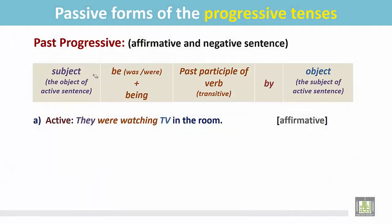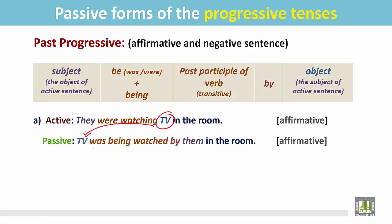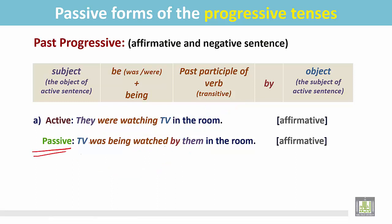See the example. 'They were watching TV in the room.' This is an affirmative statement. 'TV' is the object of the verb. The object becomes the subject in the passive sentence. It is a singular noun, so use 'was', then 'being', then the past participle form of the transitive verb, then 'by'. The passive form is: 'TV was being watched by them in the room.' This is still an affirmative sentence as a statement.